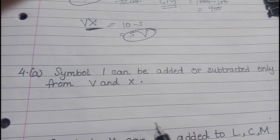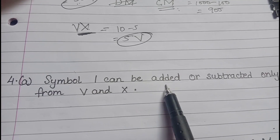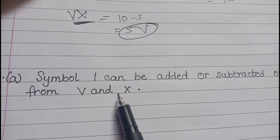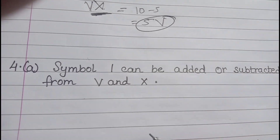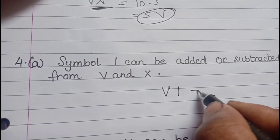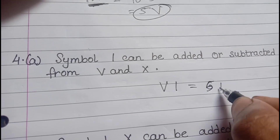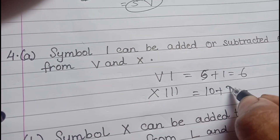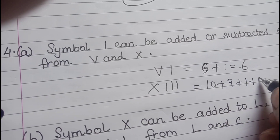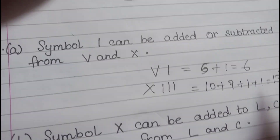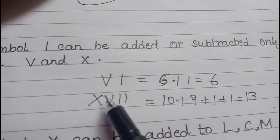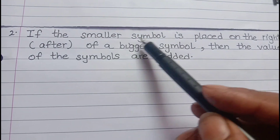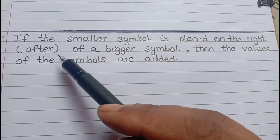Symbol I can be added or subtracted only from V and X. For example, VI is 5+1=6, and XIV is 10+1+1+1+1=13 — wait, XIII is 10+1+1+1=13. So I can only be added to or subtracted from V and X.